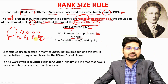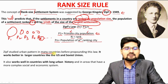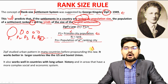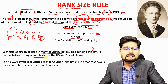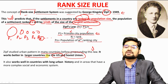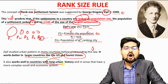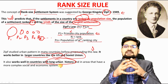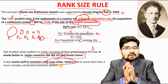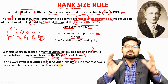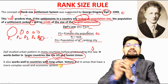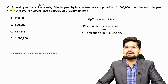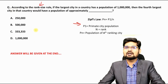Zipf studied urban patterns in many countries before propounding this theory. He found that it works better in larger countries like the US and Soviet Union, and also works well in countries with a long urban history. The long developmental history is very important so that a country has one big city and progressively smaller cities in subsequent ranks.